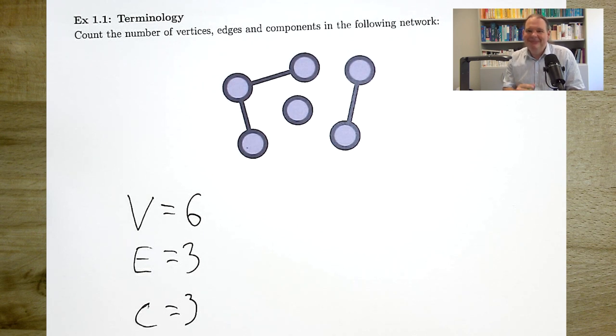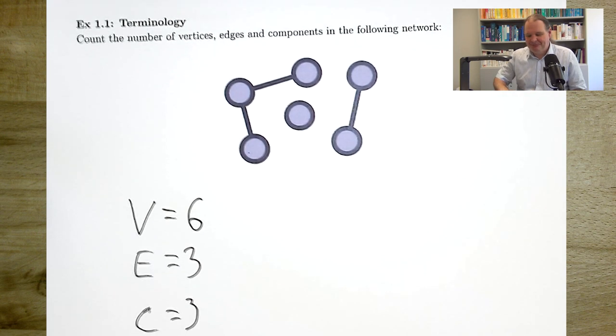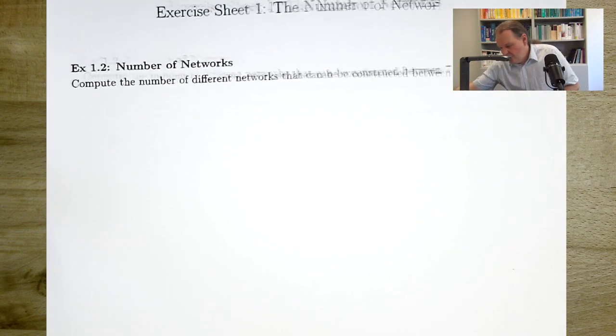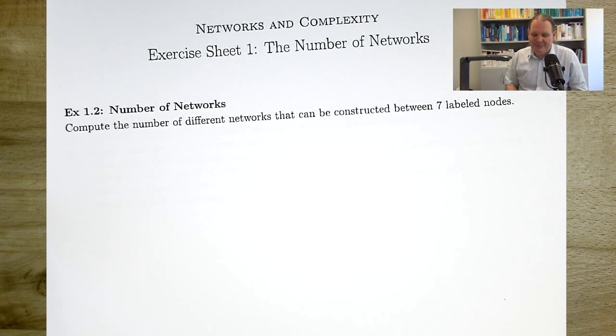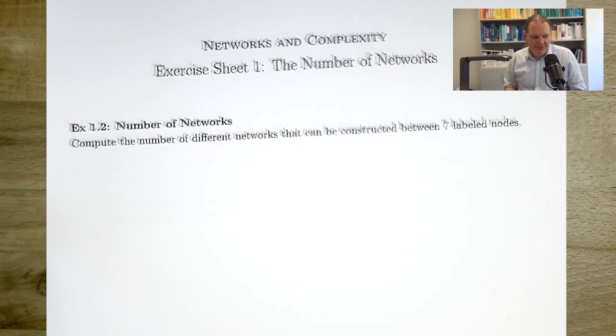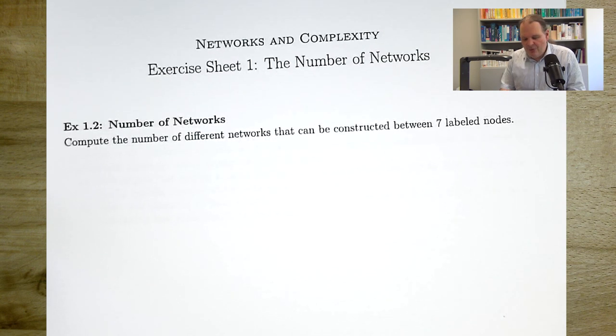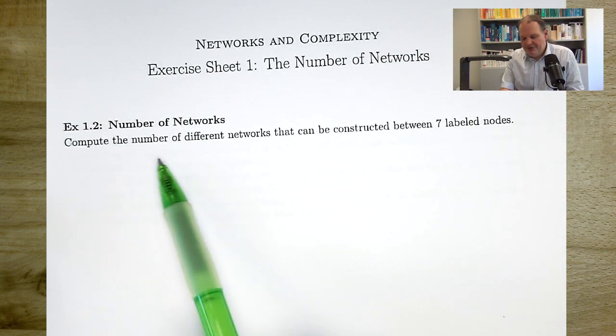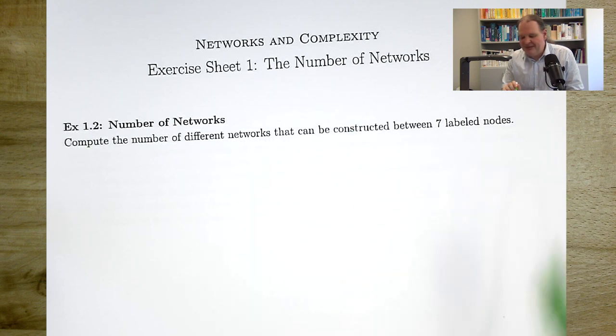And this is the result. This network has 6 vertices, it has 3 edges and it has 3 components. Wasn't too hard, was it? Let's go on to the next one. So, this is an abstract question, the number of networks. We want to compute the number of different networks that can be constructed between 7 labeled nodes. If you want to do it yourself, now is your chance to pause the video.